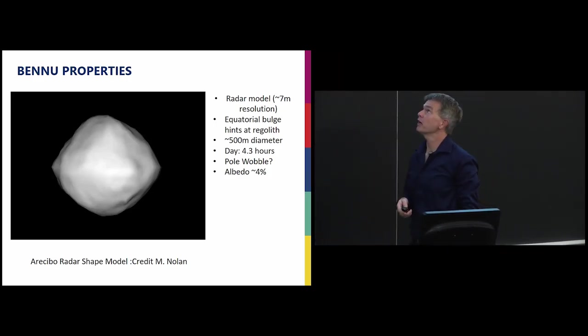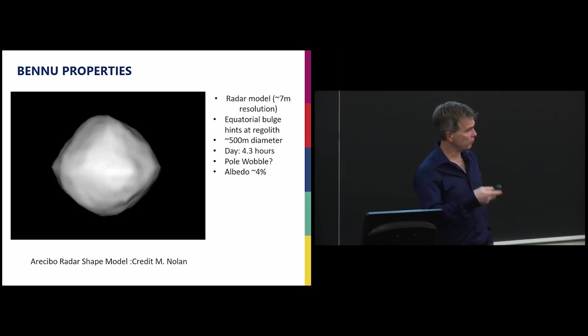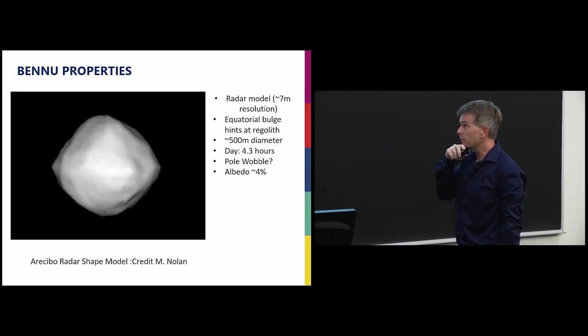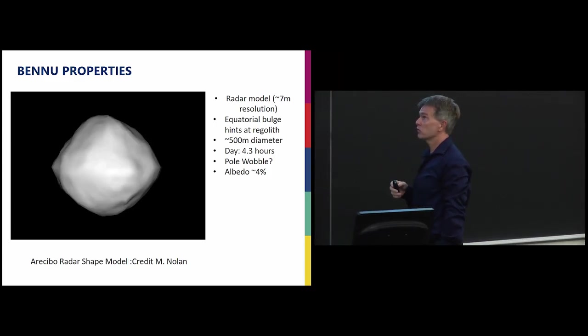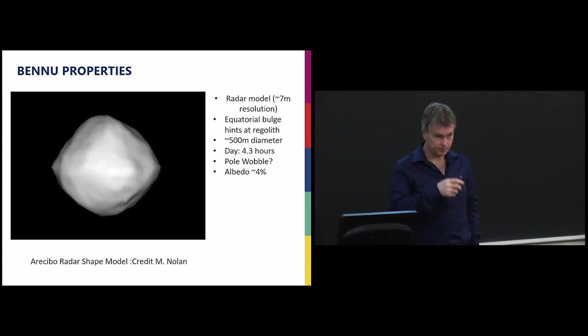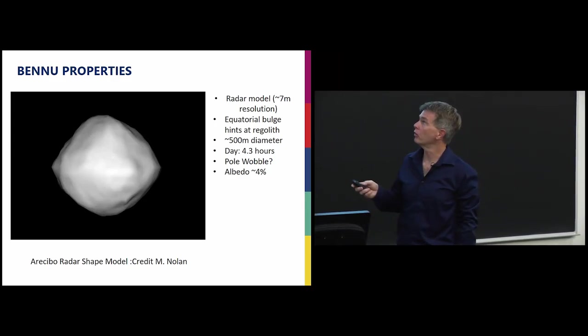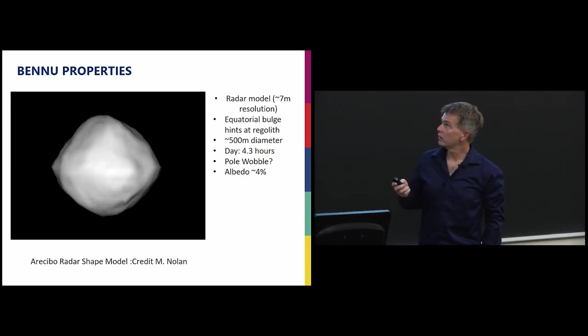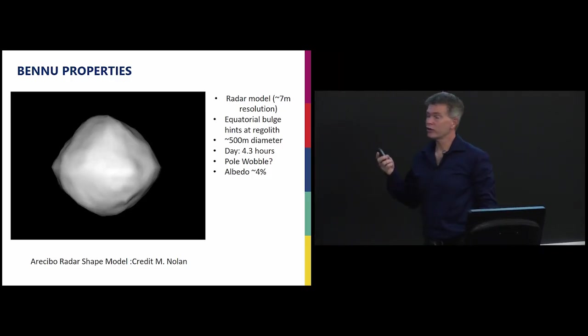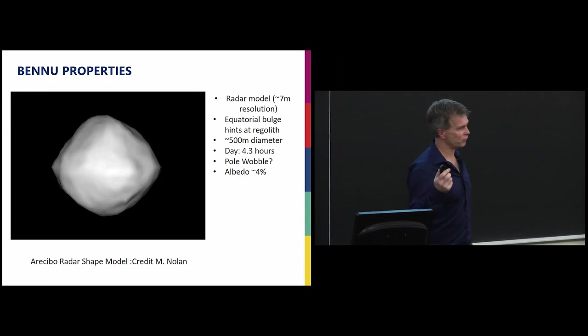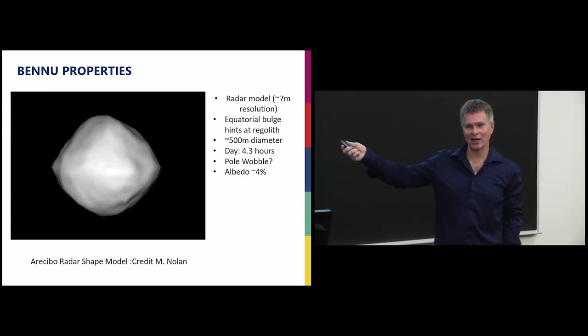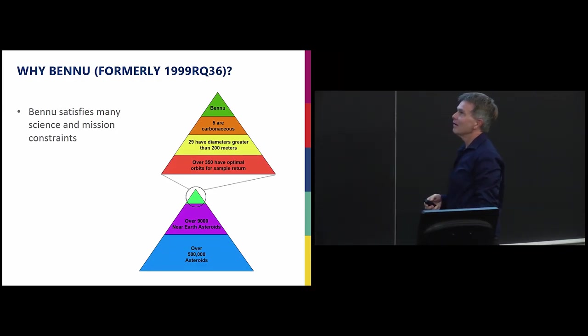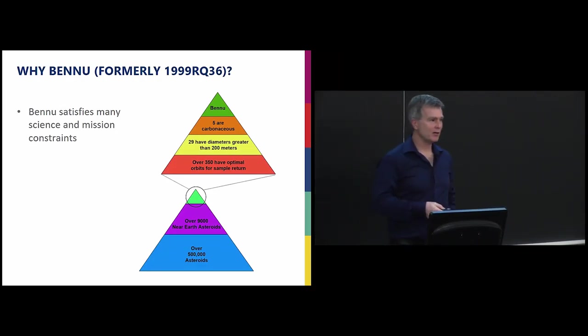So let's talk about why we chose Bennu in particular. Bennu is about a 500 meter diameter object. Its day is about 4.3 hours. This is a radar shaped model developed using primarily the Arecibo radar. It's about a 20 meter resolution. So this is our best guess as to what Bennu looks like. You can see there's a fairly pronounced equatorial ridge here. So the pole is in this direction. This is all we currently know. So when you see pictures in the newspaper in a couple of years of what Bennu actually looks like, you'll be able to see how close to right we were.